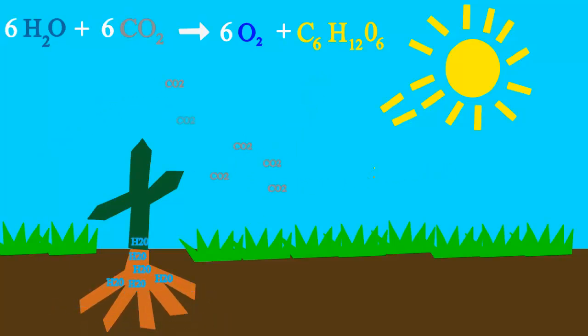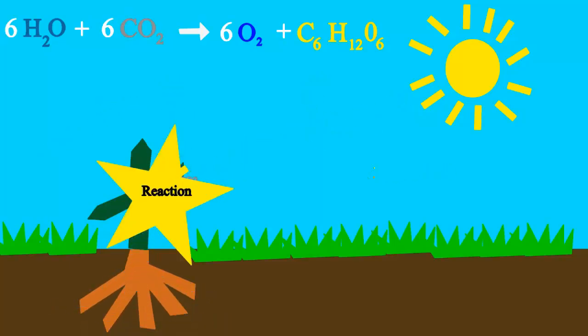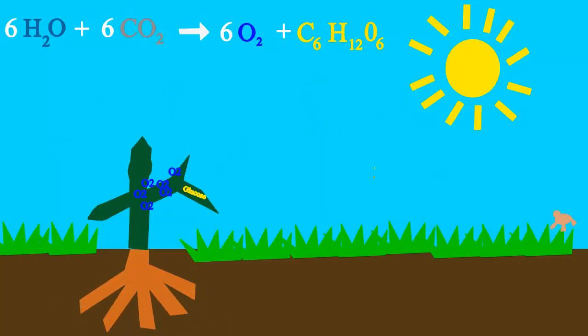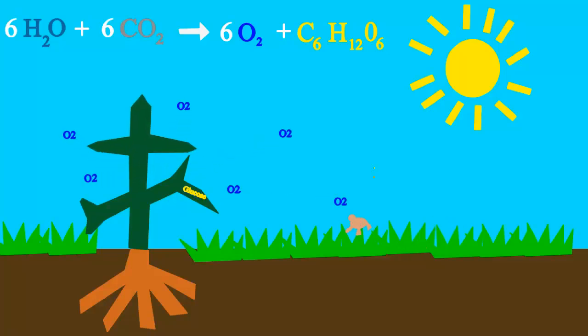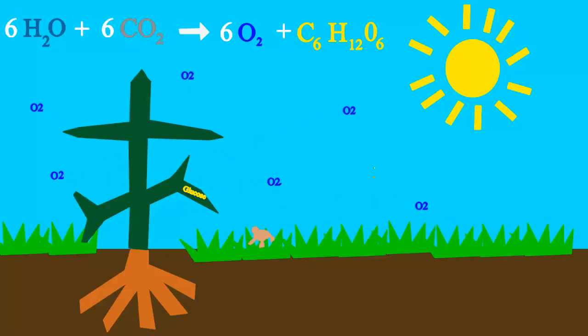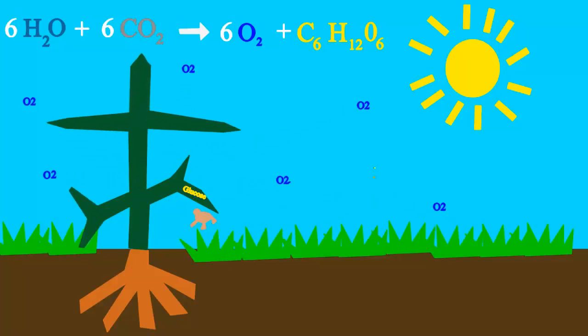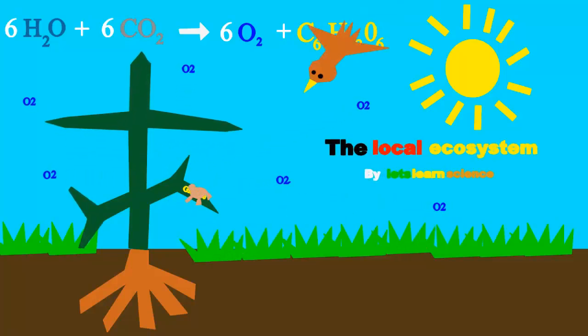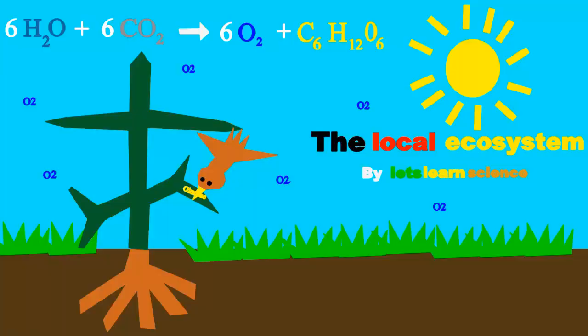Plants take water, sun and CO2 to make glucose, the sugar that they use for food. They also put oxygen into the air so we can share because oxygen is everywhere.